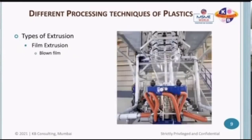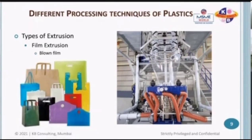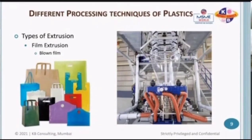The next is blown film extrusion. In this process, the machine has a die at the bottom and plastic is extruded from bottom to top in a circular fashion. Air is blown inside, which helps create a bubble-like structure, and it is used to manufacture bags — different kinds of bags that we see or use at home. The volume and temperature of air help determine the properties and thickness of the plastic. Rollers on top pull the plastic as it's extruded from the die, and the speed of pull also helps determine the properties and thickness of the plastic bag.